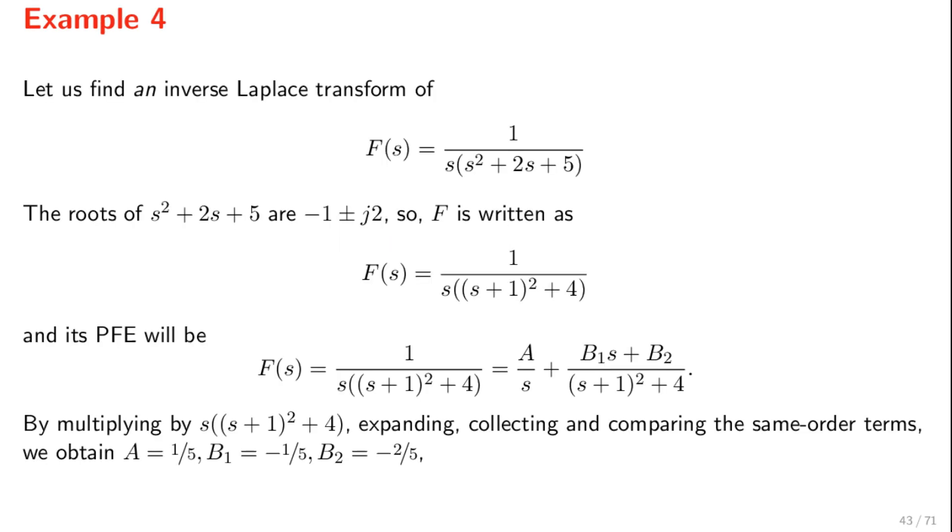Let us try to determine the inverse Laplace transform of this function. It is clear that zero is a pole of f. By solving the quadratic equation s squared plus 2s plus 5 equals zero, we can find that minus 1 plus minus 2j is a pair of complex conjugate poles. This means that we can write f as follows, and the corresponding partial fractions expansion will be a over s plus this second term.